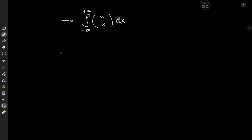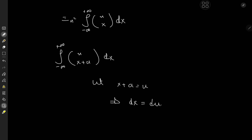By that I mean if I have instead the integral from negative to positive infinity of n choose (x + a), with a being any real number, I could let u = x + a, which implies dx = du, and the limits of integration are clearly not bothered. So we have the integral over the real line of n choose u du, which is exactly the target integral. In other words, replacing x by x + a does not affect the value of the integral.